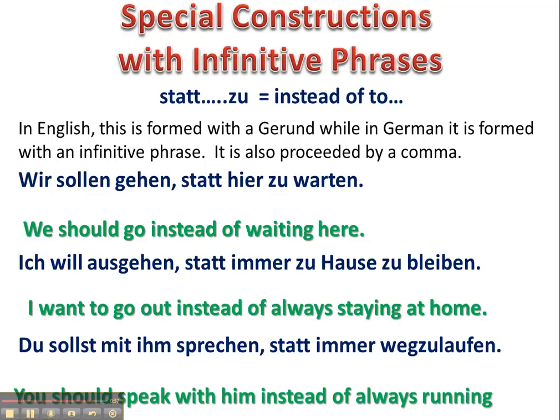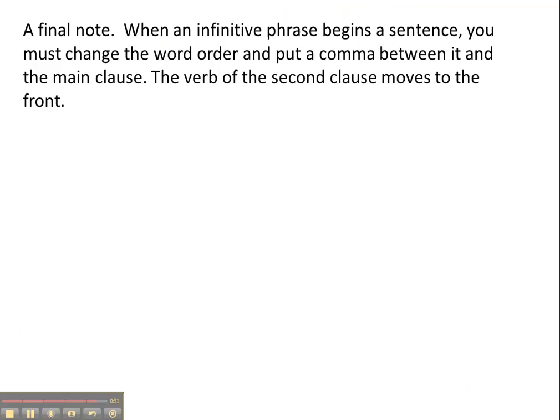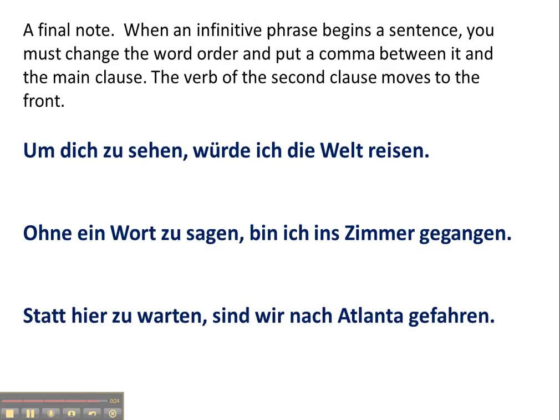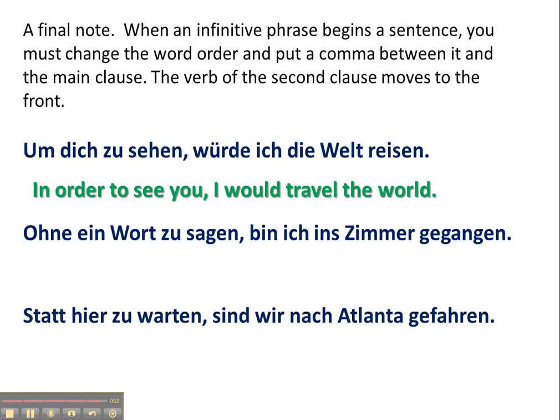A final note: when an infinitive phrase begins a sentence, you have to change the word order. If you start your sentence like 'um dich zu sehen,' then the next thing in the following clause is going to be a verb. 'Ohne ein Wort zu sagen, bin ich ins Zimmer gegangen.' 'Statt hier zu warten, sind wir nach Atlanta gefahren.'